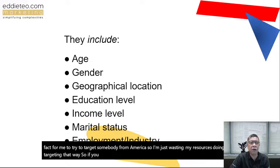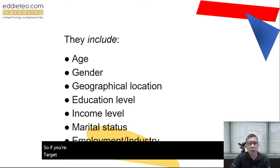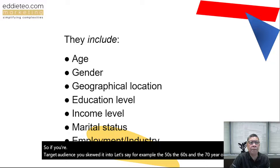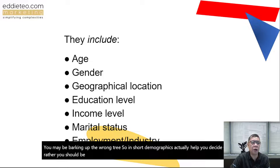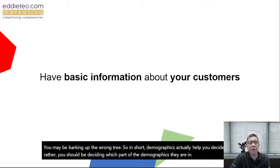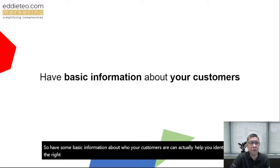Similarly, if you are selling a very trendy, hippie product, your audience will probably be the younger generation. So if your targeting is skewed toward people in their 50s, 60s, and 70s, you may be barking up the wrong tree. In short, demographics help you decide which segment of the population you should be targeting. Having basic information about who your customers are can help you identify the right target audience for your products and services.